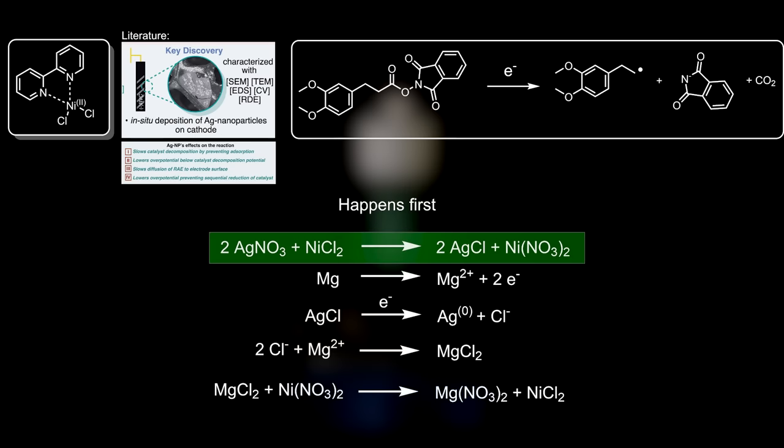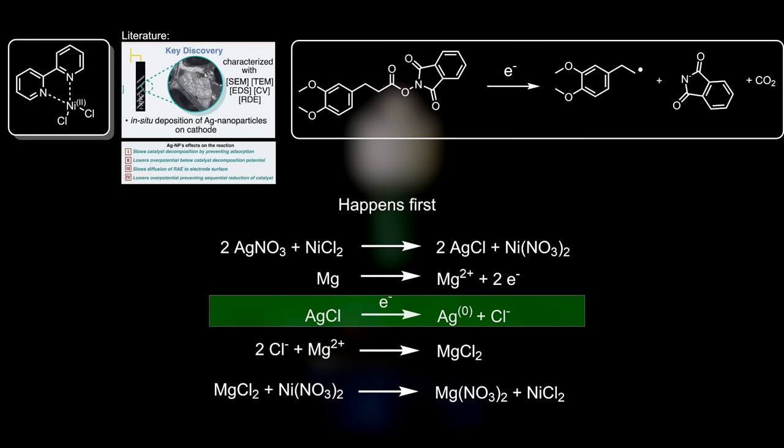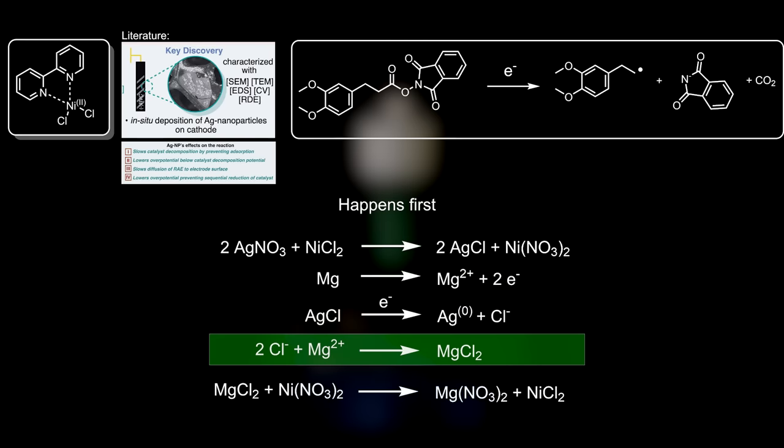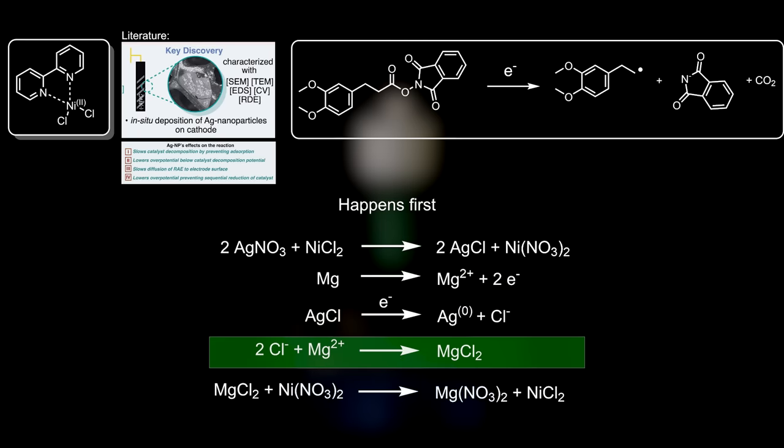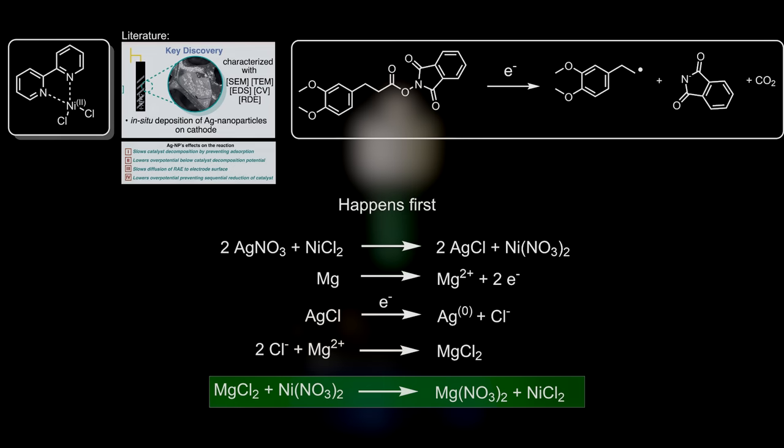First, silver nitrate reacts with nickel chloride to form silver chloride and nickel nitrate. The magnesium sacrificial anode gives up the electrons and is oxidized to magnesium 2+. While at the cathode, silver chloride is reduced to silver. The remaining chloride and magnesium ions will then form magnesium chloride. Magnesium chloride then reacts with nickel nitrate to form magnesium nitrate and nickel chloride. So after all the silver has been reduced, all nickel chloride is restored and can serve in the next reactions.